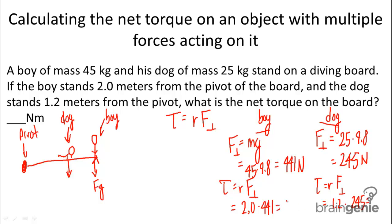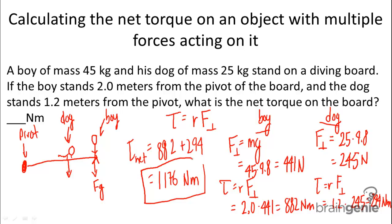And we get values of 882 newton meters for the boy and 294 newton meters for the dog. To figure out the net torque, we're just going to add these two values together: 882 for the boy plus 294 for the dog. We get a final value of 1,176 newton meters of net torque for the dog and the boy combined.